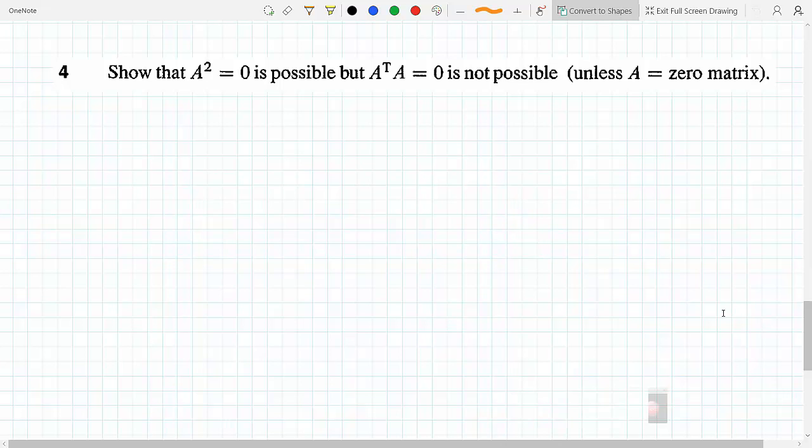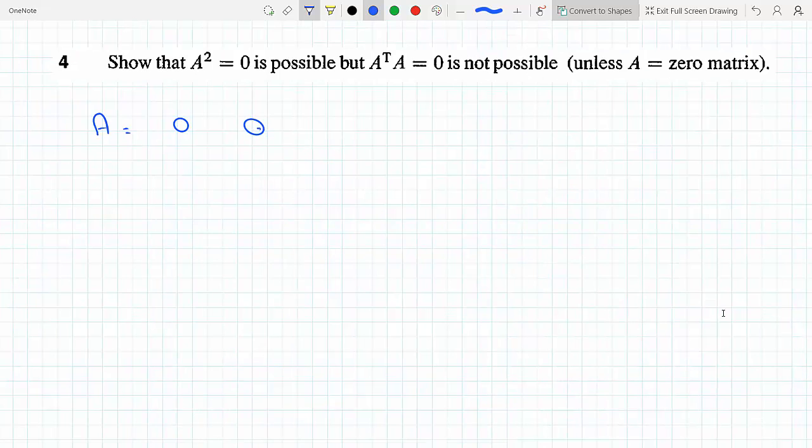Show that A² = 0 is possible but A^T A = 0 is not possible unless A is the zero matrix. Okay, let's consider a specific example. Let's take A = [[0,0],[1,0]].